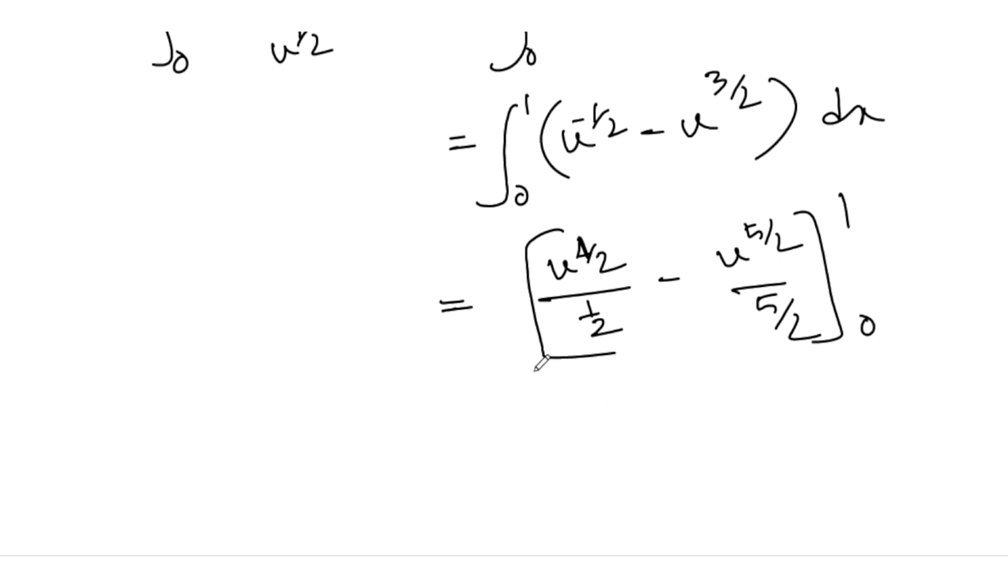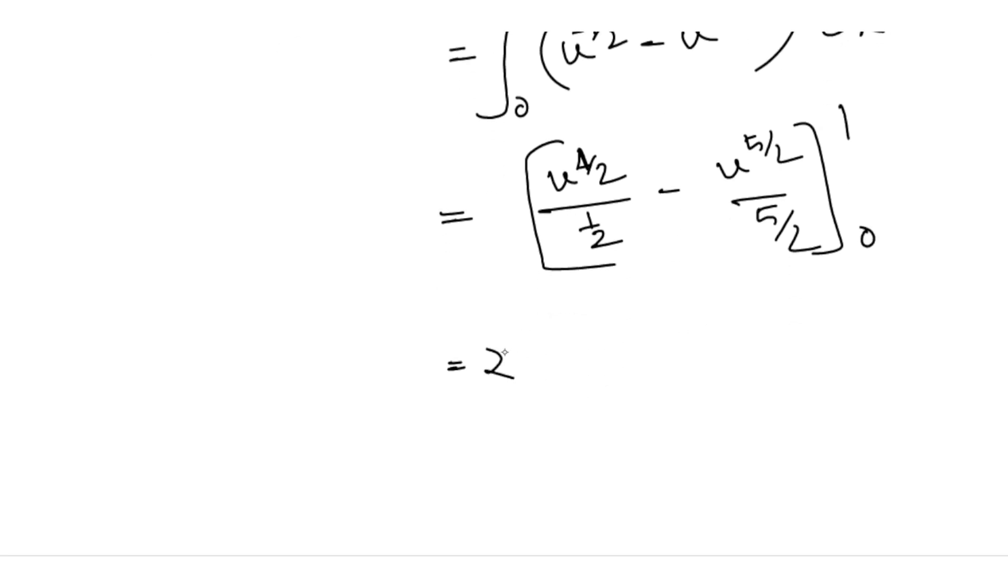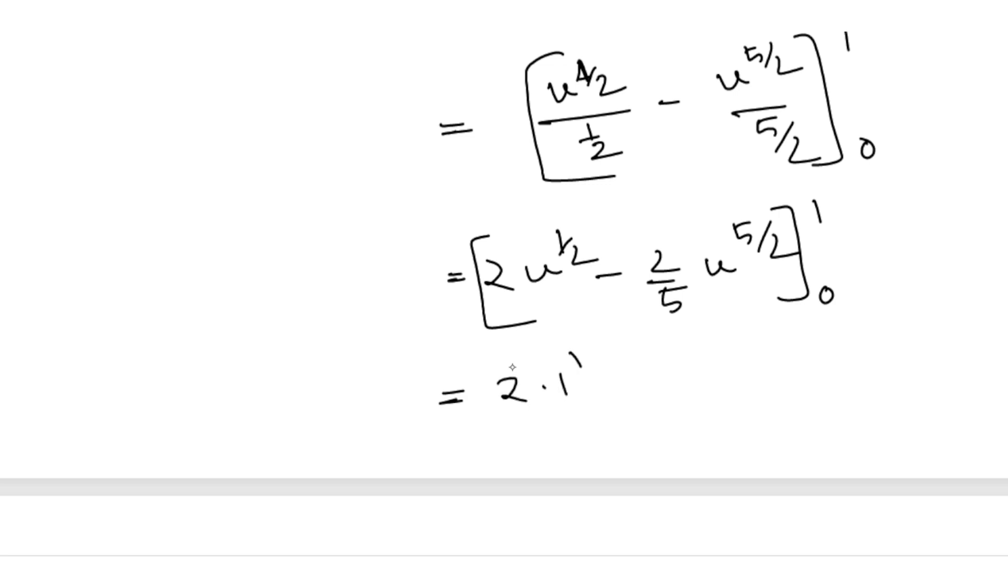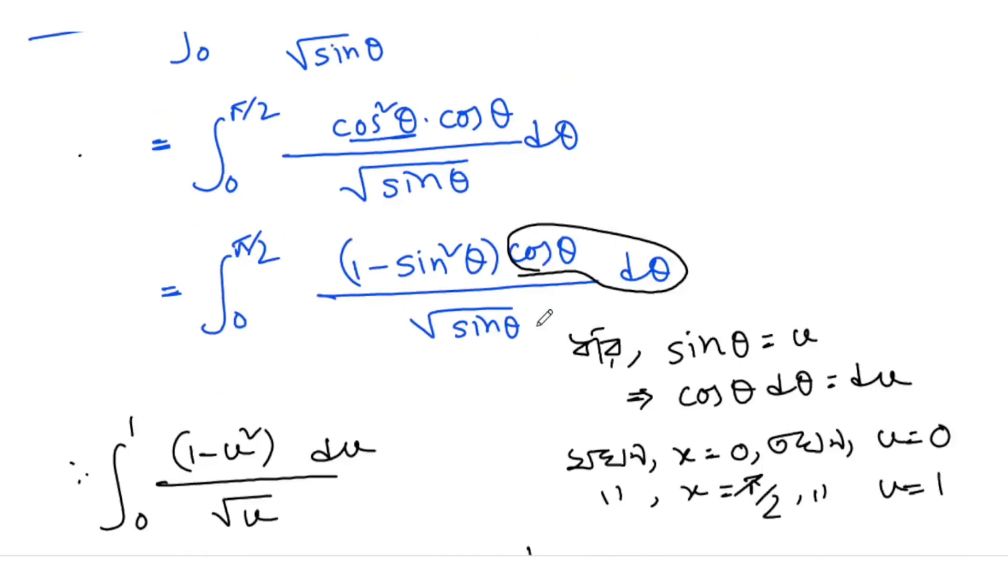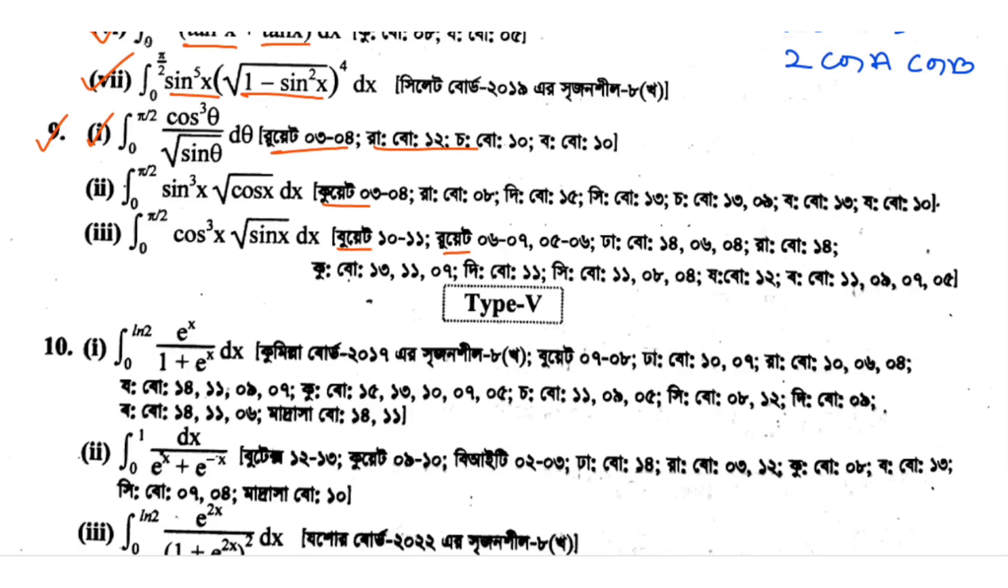This becomes 2 times u to the 1/2 minus 2/5 times u to the 5/2, evaluated from 0 to 1. Plugging in the upper limit: 2 times 1 minus 2/5 times 1, which equals 2 minus 2/5. That gives us 10 minus 2 over 5, which equals 8/5. So the final answer is 8/5.